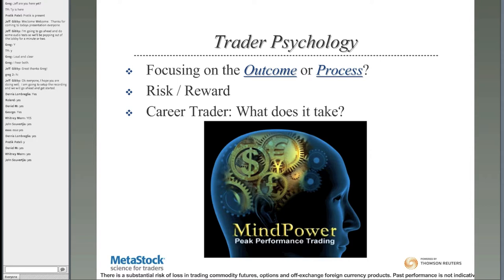I always ask people to focus on the process a little bit less on the outcome — what they might make or lose — and really define that process and execute, execute, execute. Secondly, risk/reward — that's the number one thing that gets traders in trouble. If you're not aiming for at least a one-to-three or one-to-four risk/reward ratio, I think your system is flawed. If you're executing on a one-to-one basis, you'd better be right at least 51% of the time.